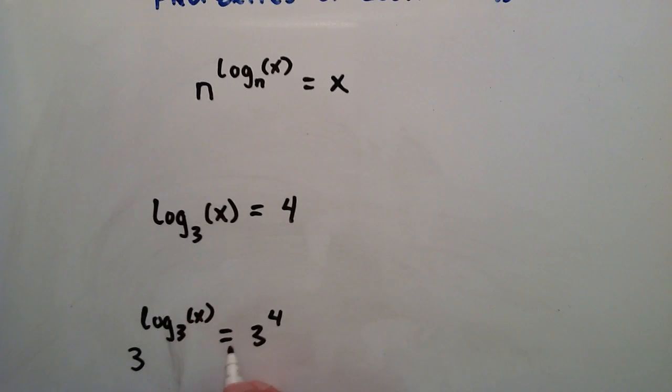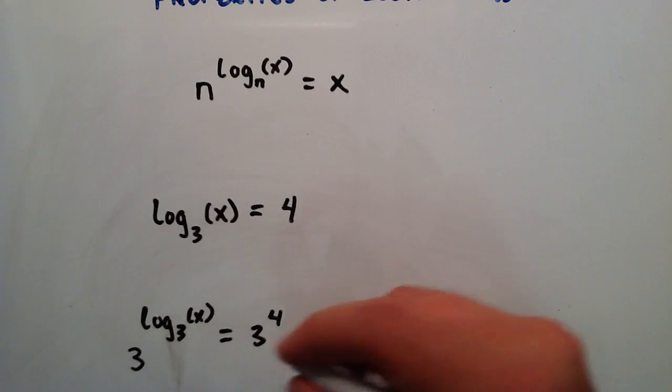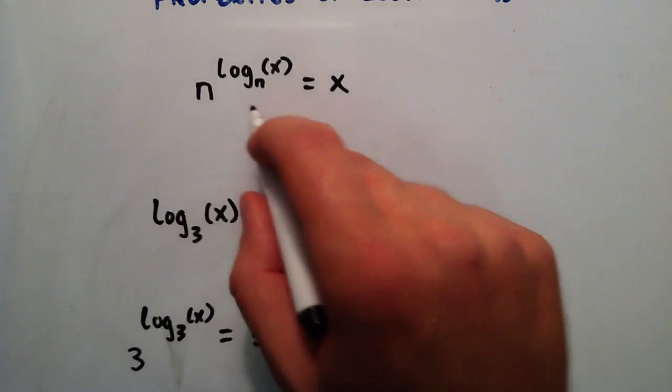So we're saying 3 to the 4 equals 3 to the 4 because both of these equal 4. 4 equals this. And now we have this in the form of our property here.